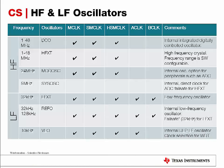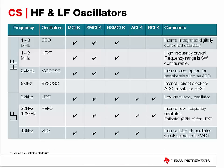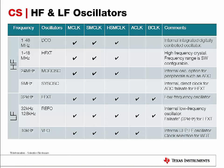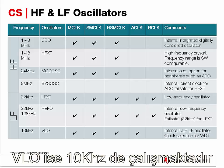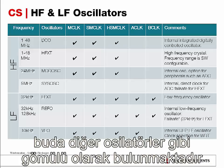Moving on to the low-frequency clock sources. We have the low-frequency crystal, which is a typical 32 kHz crystal that you can use to run an accurate RTC clock, for example. We also have an internal oscillator called REFO. This REFO is an internal oscillator that can generate a 128 kHz clock signal and can also be divided down to 32 kHz. Lastly, we have a very low-frequency oscillator, yet another internal oscillator that can generate around 10 kHz clock signal.